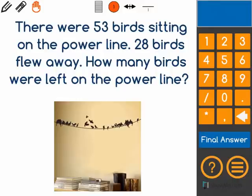The word problem says, there were 53 birds sitting on the power line. 28 birds flew away. How many birds were left on the power line?